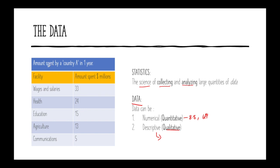Now we could see here an example of a data set — basically a table. This table is talking about the amount of money that is spent by a country in one year. We have different facilities: wages and salaries, health, education, agriculture, and communications. This is the amount of money spent on each one of those facilities in a year's time. So this is an example of data in a table, or tabulated data.